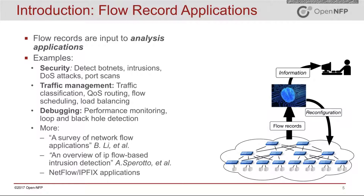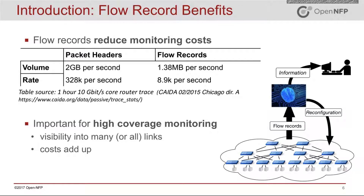The reason why flow records are widely used from the application perspective is because they're efficient — they reduce the cost of your monitoring infrastructure. If you look at the size and rate of flow records compared to something like packet headers, the volume and rate of flow records is much lower because flow records are more compact than packet headers, and also because new flow records arrive at the analysis application at the same rate as flows, which arrive orders of magnitude less frequently than packets.